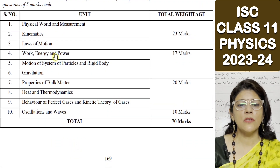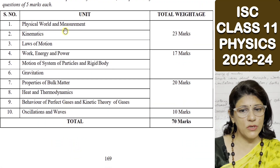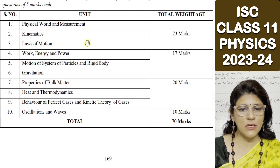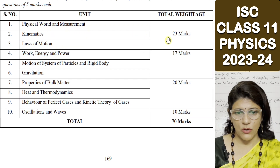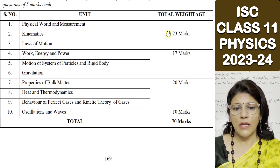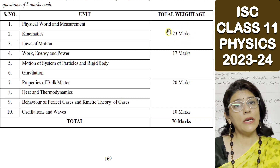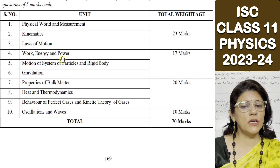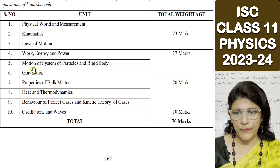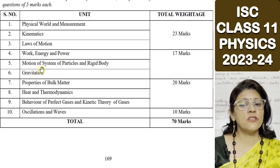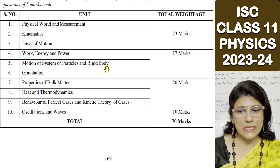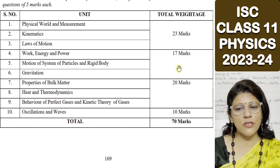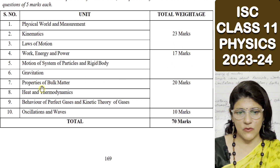Now coming to the weightage of chapters, or units. The first unit is Physical World and Measurement, second is Kinematics, and third is Laws of Motion. All these three units carry 23 marks as a whole. Next, the fourth unit is Work, Energy and Power; fifth is Motion of System of Particles and Rigid Body; and sixth is Gravitation. These three units together carry 17 marks.